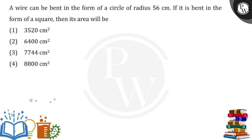A wire is bent in the form of a circle of radius 56, and then bent in the form of a square. We need to find the area of the square. First, we understand that the length of the wire remains the same — meaning the circumference of the circle and the perimeter of the square will be equal. The formula for circumference is 2πr.